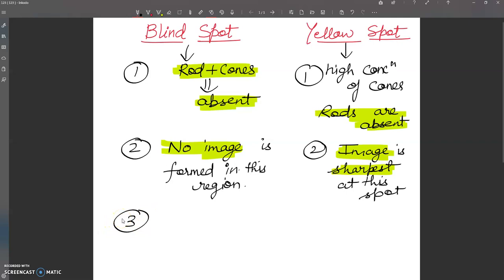A region at the back of the eye from where optic nerves leave. This is located at the back of the eye where optic nerves will leave.